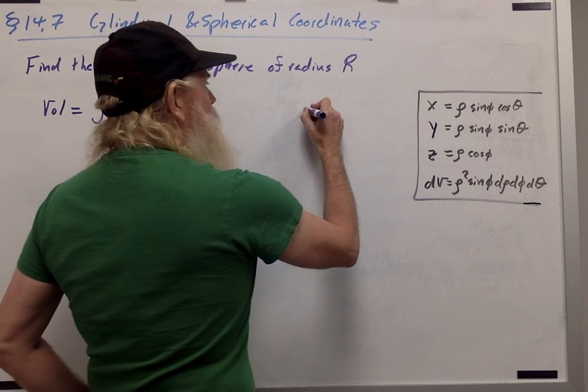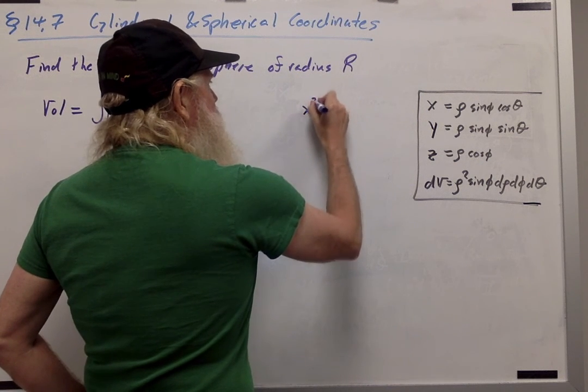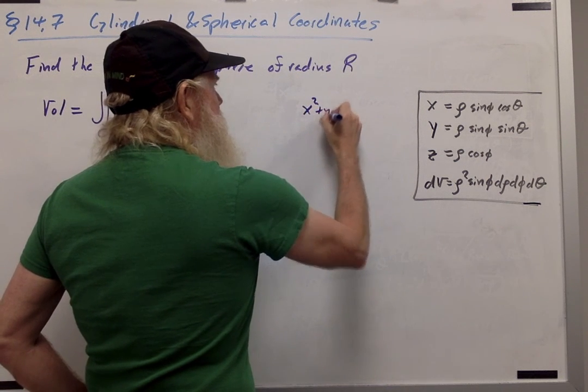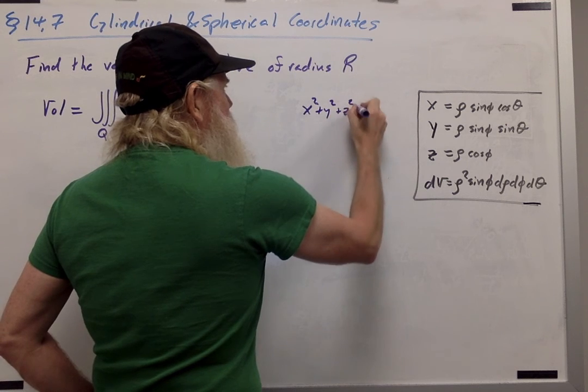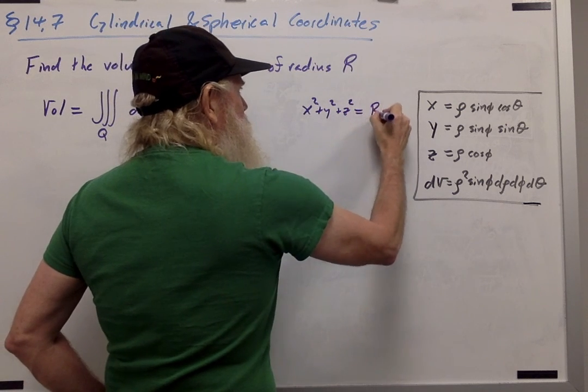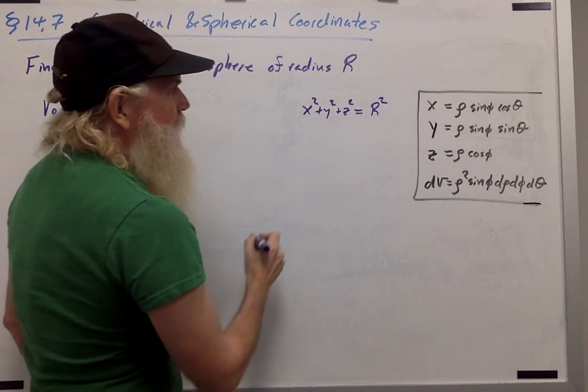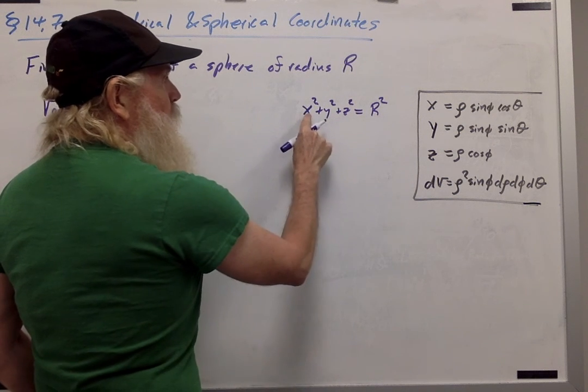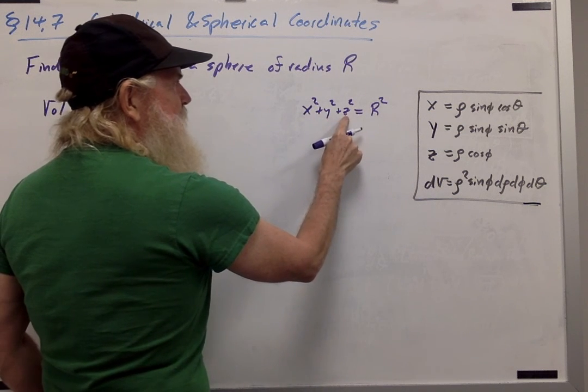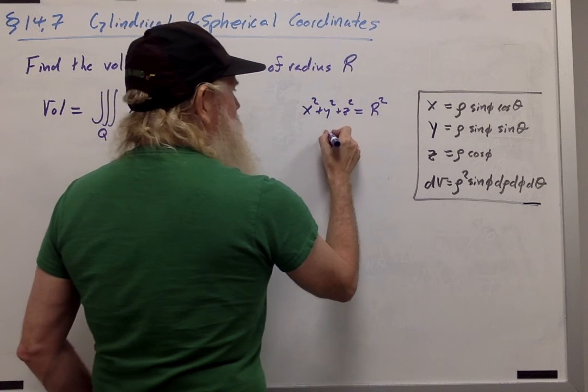First of all, in rectangular coordinates, the equation for a sphere is x squared plus y squared plus z squared equals r squared. And hopefully you'll remember that in spherical coordinates, x squared plus y squared plus z squared is the same as rho squared.